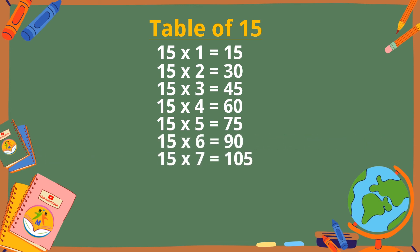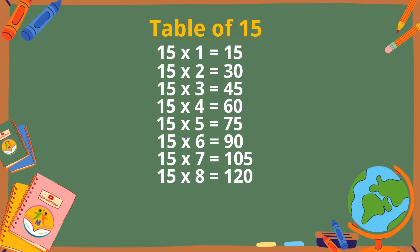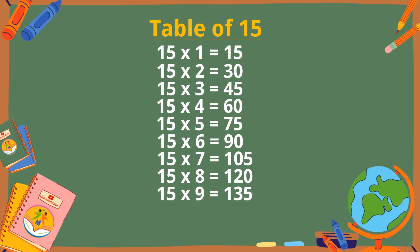15 sevens are 105. 15 eights are 120. 15 nines are 135.